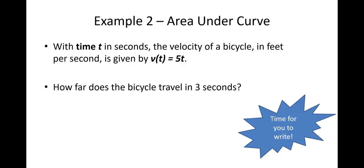Okay, it says with time t in seconds, the velocity of a bicycle in feet per second is given by this function. Velocity, that is the derivative, that is the rate, that is what is important that you understand this is a rate. How far does the bicycle travel in 3 seconds? Well, if you drew this out, and what I mean by drawing it out, is actually draw that function.